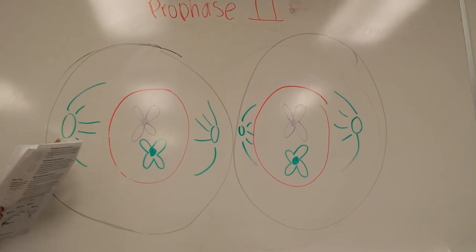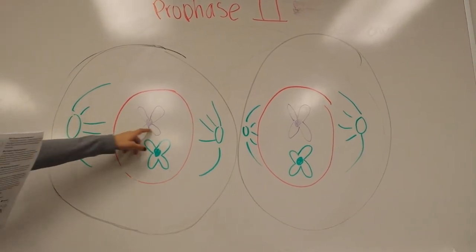In prophase 2, the spindles form and the chromosomes condense.